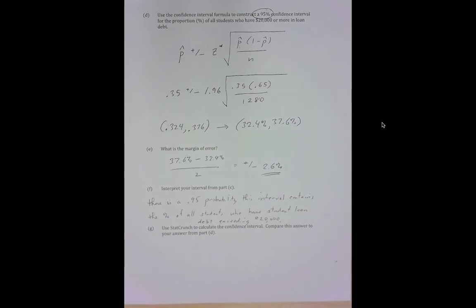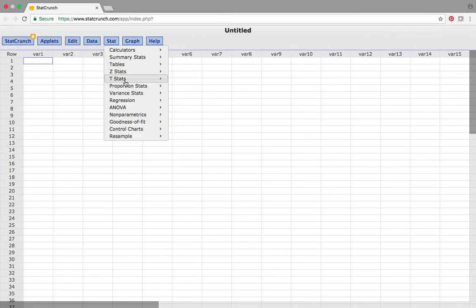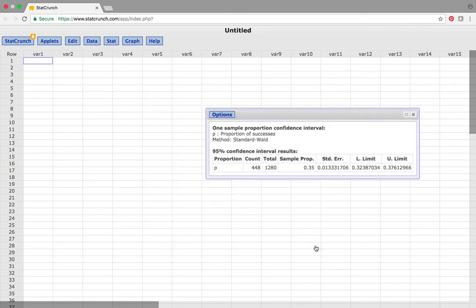Final question: Use StatCrunch. This is what we all live for right? This is the easy stuff. Proportion stats, one sample, with summary. So number of successes looked like it was 448, number of observations was 1280, confidence interval 0.95. Standard wall. So notice out here you get 0.324 which is what we got before and 0.376 which we got before, much much much easier than the other way.